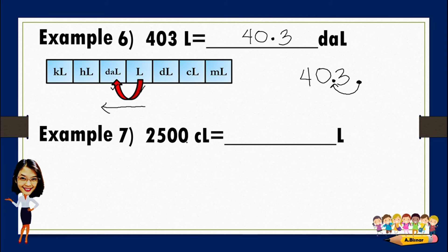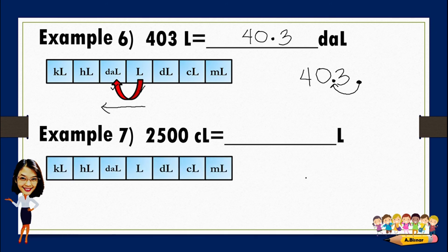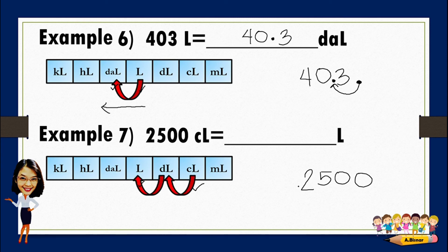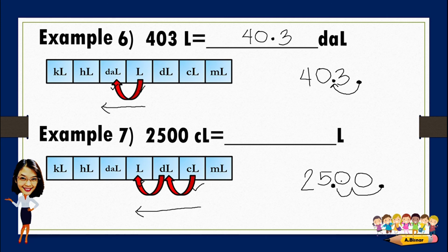Convert 2,500 centiliters to liters. We write the given: 2,500. From centiliters to liters: one, two — two movements to the left. Since this is a whole number, the decimal point is at the right side of the last digit and we move it two times to the left. The decimal point lands between five and zero; since trailing zeros have no value, we simply write 25. So 2,500 centiliters is equivalent to 25 liters.